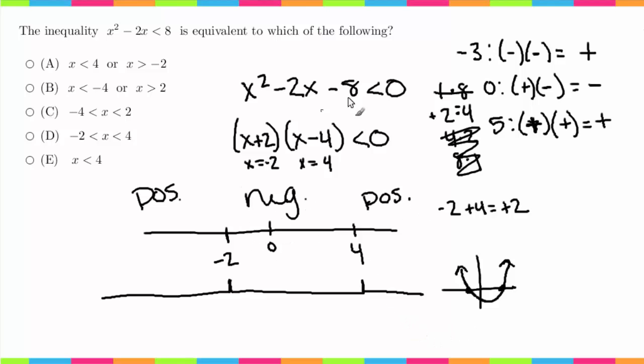So that tells me the range for this polynomial where it's negative or less than 0 is between negative 2 and positive 4. So that gives us this answer here, answer choice D.